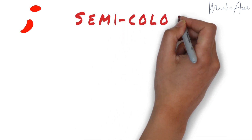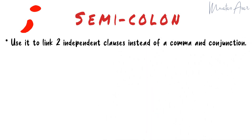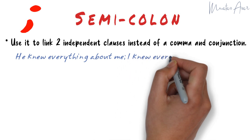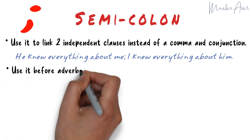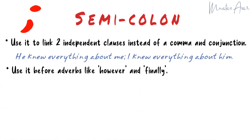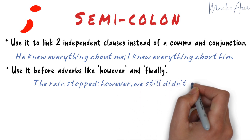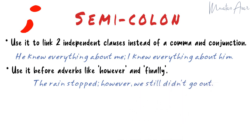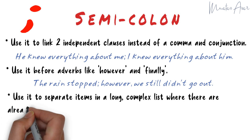Semi-colon. Use a semi-colon to link two independent clauses instead of a comma and a conjunction. For example: "He knew everything about me; I knew everything about him." Use a semi-colon before adverbs like however and finally. For example: "The rain stopped; however, we still didn't go out." Use a semi-colon to separate items in a long, complex list where there are lots of commas.